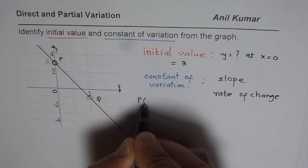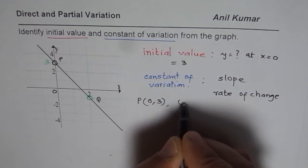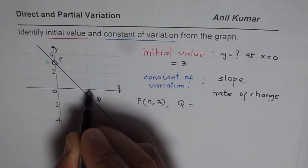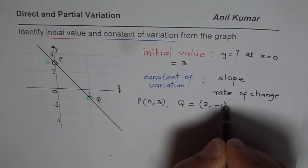Point P for us is (0, 3). 0 is the x value, 3 is the y value. And point Q is (2, -1). At 2 the value is -1.